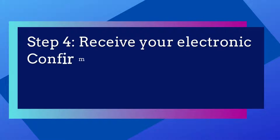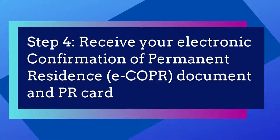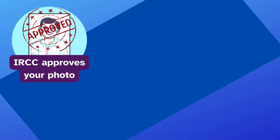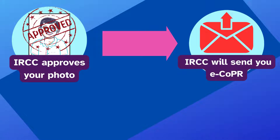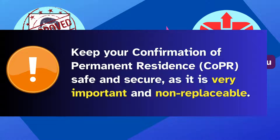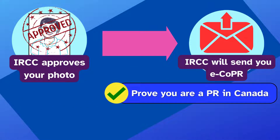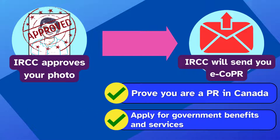Step 4: Receive your electronic confirmation of permanent residence document and PR card. Once IRCC approves your photo, they will send you a confirmation of permanent residence document through the Portal. You should keep this document safe and secure, as it is very important and non-replaceable. You can download and print this document to prove you are a permanent resident in Canada and to apply for government benefits and services for which you are eligible, such as applying for your social insurance number so you can work.